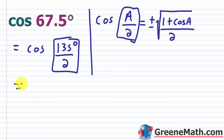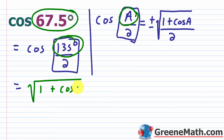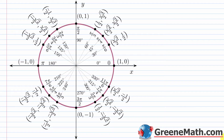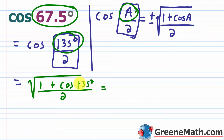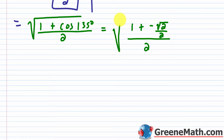Since we're trying to find the cosine of 67.5 degrees, this angle is in quadrant 1, so cosine is positive and we want the principal square root. So this equals the principal square root of 1 plus the cosine of 135 degrees, all over 2. From the unit circle, the cosine of 135 degrees is negative square root of 2 over 2. So we have the square root of 1 plus negative square root of 2 over 2, all over 2.